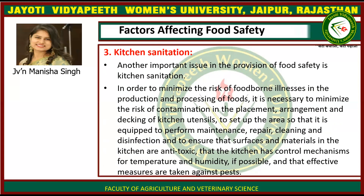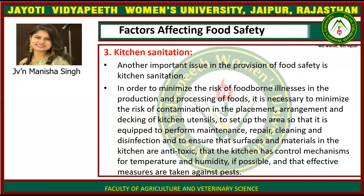The third factor is kitchen sanitation. In order to minimize the risk of foodborne illness in the production and processing of foods, it is necessary to minimize contamination risk in the placement and arrangement of kitchen utensils, to set up the area for maintenance, repair, cleaning, and disinfection, and to ensure that surfaces and materials in the kitchen are non-toxic and that the kitchen has control mechanisms for temperature and humidity.